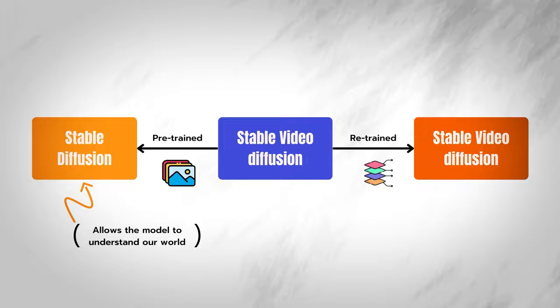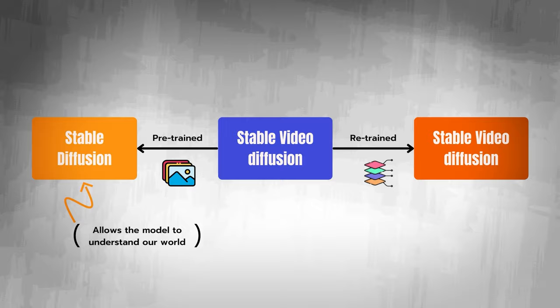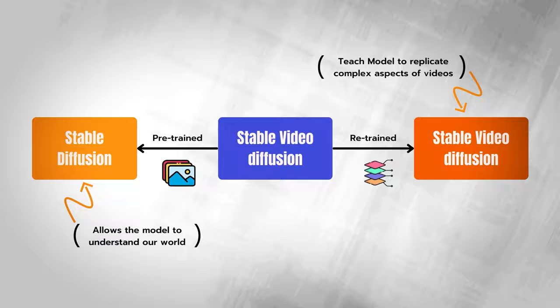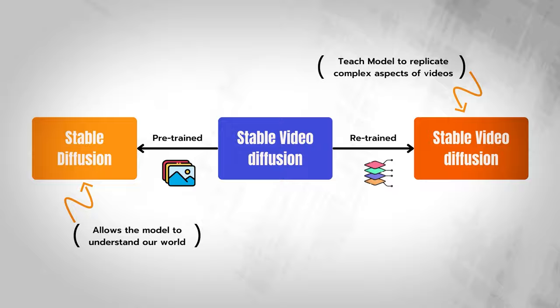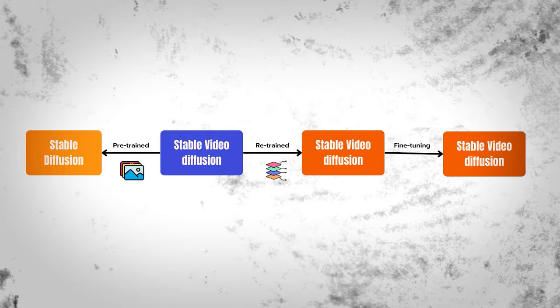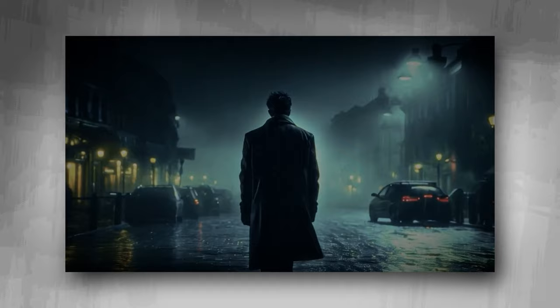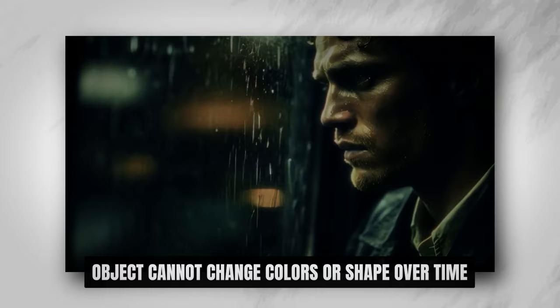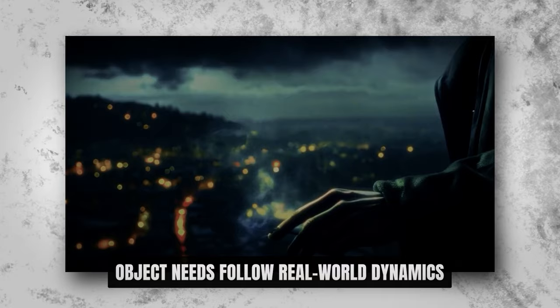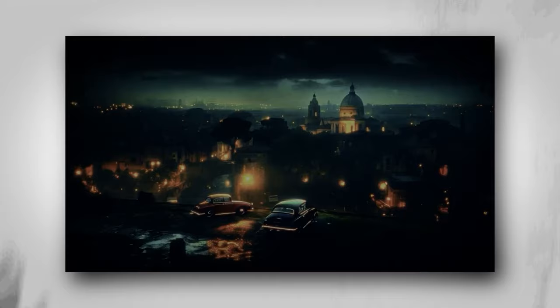The pre-training on images allows the model to understand our world with lots of examples of various objects and scenes. Then the model learns to replicate complex aspects of videos such as movement, changes in scenery, and interaction between objects with a similar training process but with multiple frames generated at the same time. Finally, for quality, we add a final fine-tuning step where we repeat this video training process but using only high-quality videos to further improve the results. In videos, not only does the appearance of objects matter, but so does their movement and how they change over time — the object cannot change color or shape. It also needs to follow real-world dynamics depending on what it is: it moves differently if it's a rock or a cat. The model is trained to capture these dynamics, ensuring that the generated videos have a natural and fluid motion.